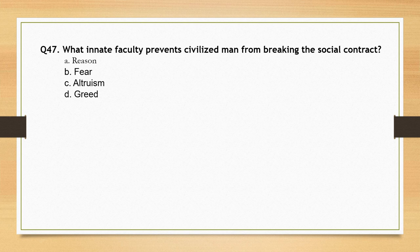What innate faculty prevents civilized man from breaking the social contract? Options: reason; fear; altruism; greed. The correct option is option B: fear.